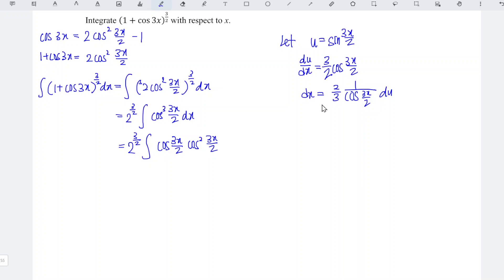And what is dx? dx is 2 over 3 times 1 over cos 3x over 2 du. So we can now simplify and reduce the function.